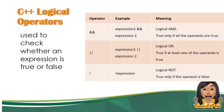Let's recap what C++ Logical Operators are. When we say C++ Logical Operators, they are used to check whether an expression is true or false. These are the operators used: we have Logical AND, Logical OR, and Logical NOT. When using Logical AND — for example, Expression 1 AND Expression 2 — if one expression evaluates to false, the given expression is automatically equivalent to false.